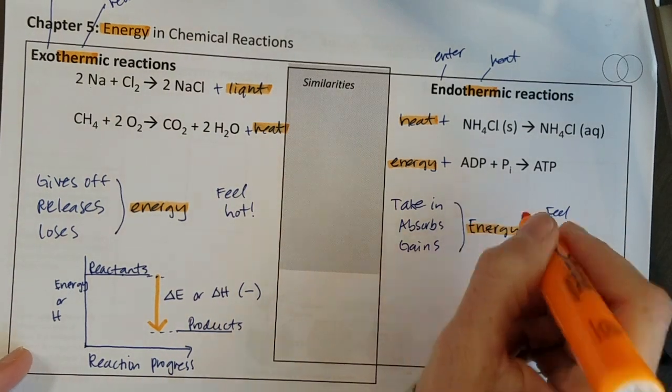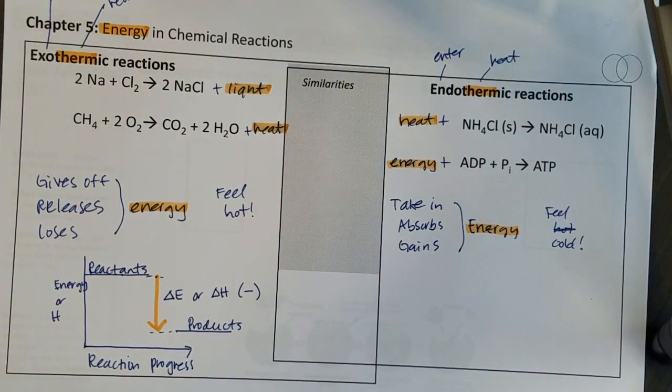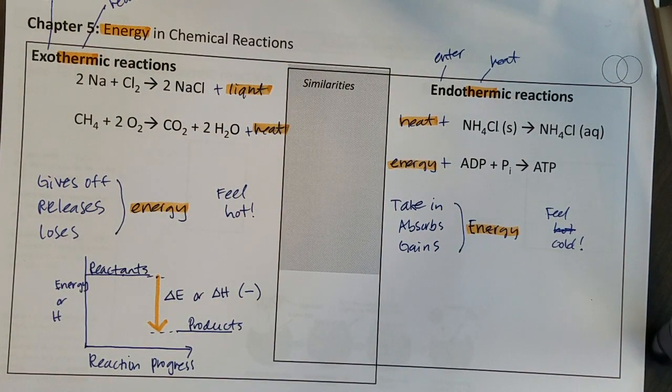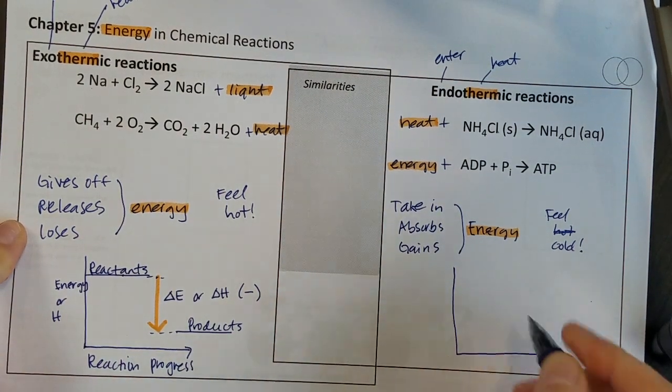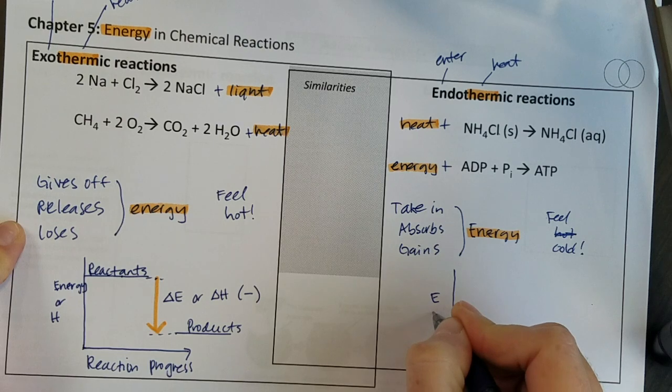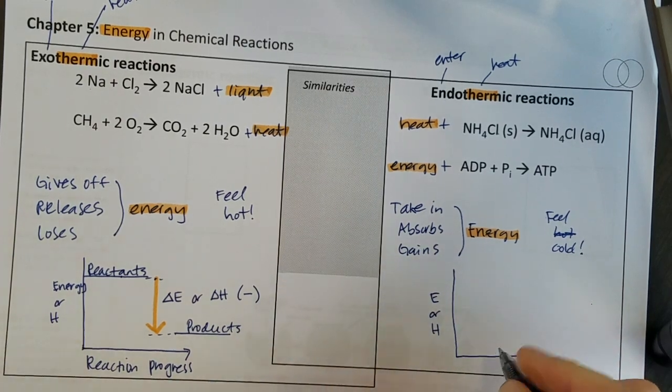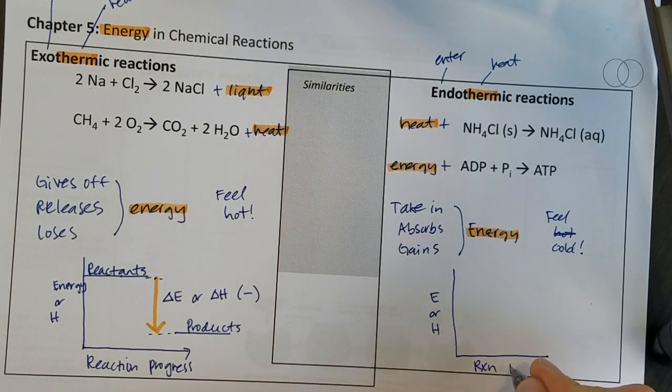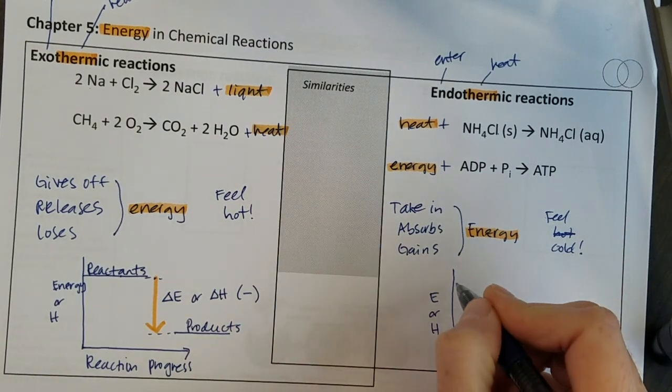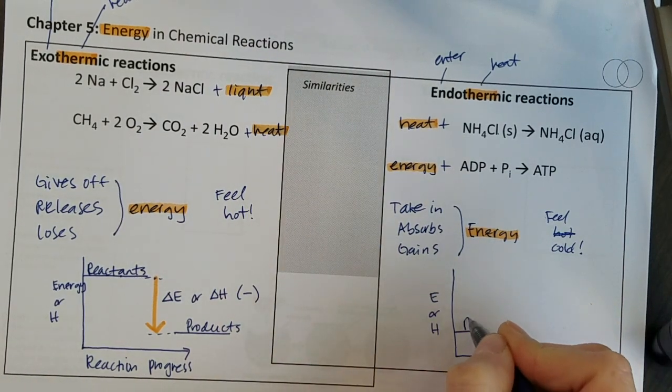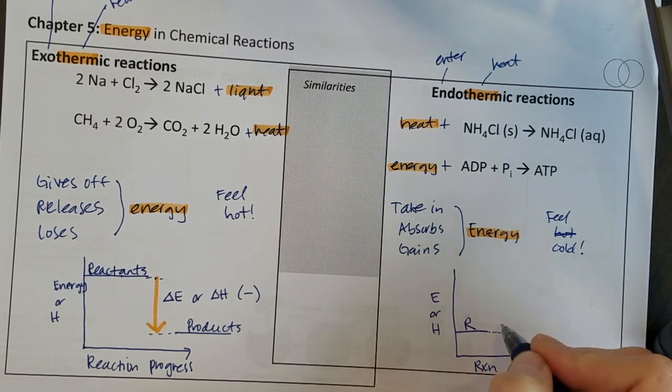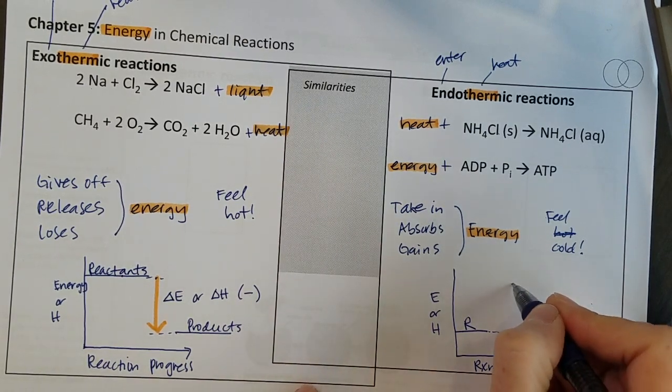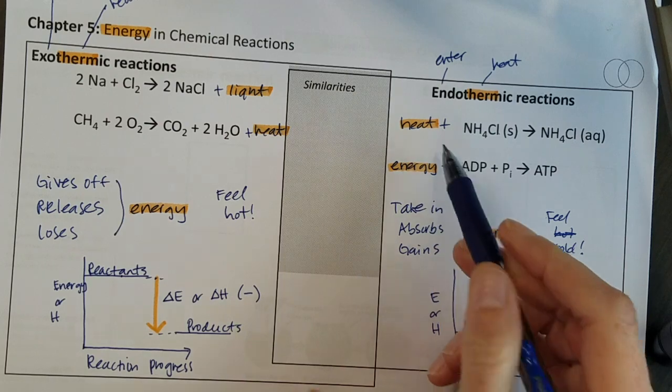You can see how that's opposite of my exothermic reaction. Now let's draw a sketch, an energy diagram is what these are called. So I've got energy or maybe H on the y-axis, I have reaction progress on the x-axis. This time my reactants don't have quite as much energy in them to start with.